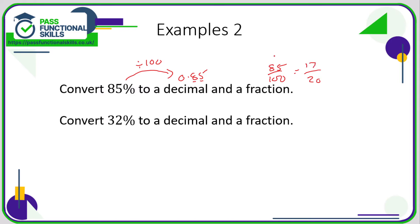And that fraction can't be simplified anymore because 17 is a prime number. 32 percent to a decimal: divide by 100, so 0.32. As a fraction, 32 percent means 32 out of 100. And this fraction can be simplified: divide top and bottom by 2, divide by 2 again, and 8 twenty-fifths. We can't simplify that anymore because I can't think of a number that goes into both 8 and 25.